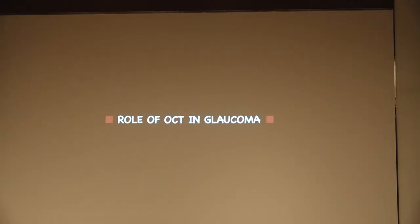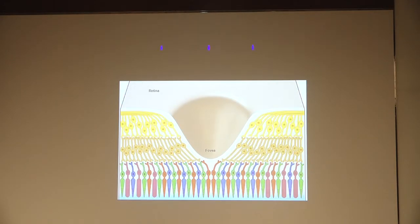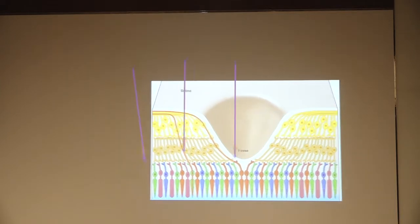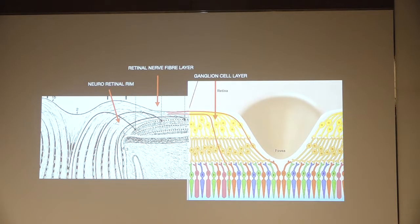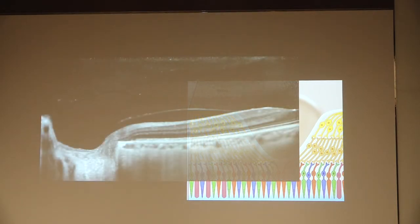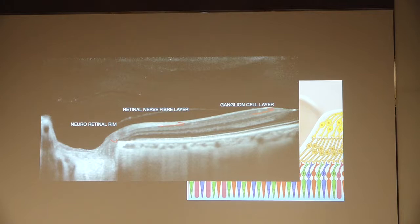Let's see the role of OCT in glaucoma. Once light falls on the retina, it comes to the rods and cones, through the bipolar cells, into the ganglion cells, and the unmyelinated axons are segregated together — this is what forms the neuroretinal rim, which is beautifully seen in the spectral domain OCT. Here we have the neuroretinal rim, retinal nerve fiber layer, and the ganglion cell layer.